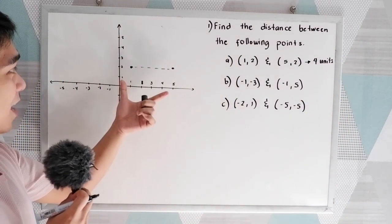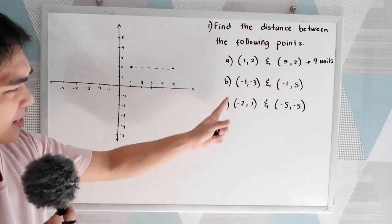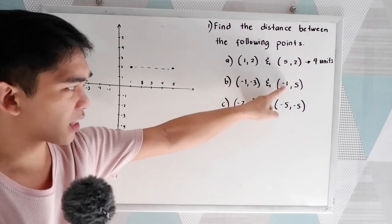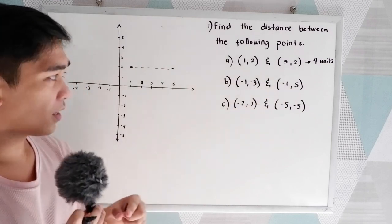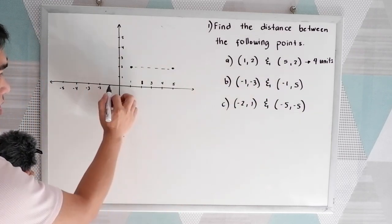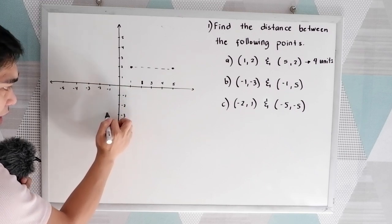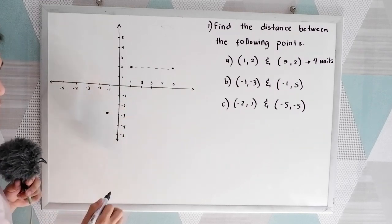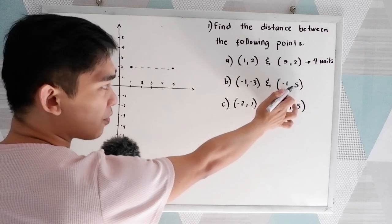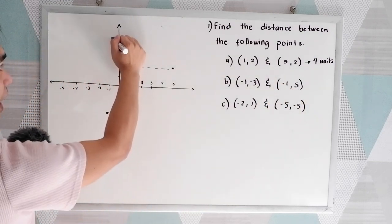You can verify that by plotting the two points. The second problem is (-1, -3) and (-1, 5). So let us plot (-1, -3): negative 1, then negative 3 — this will be our first point. Then our second point is (-1, 5): negative 1, going to positive 5.